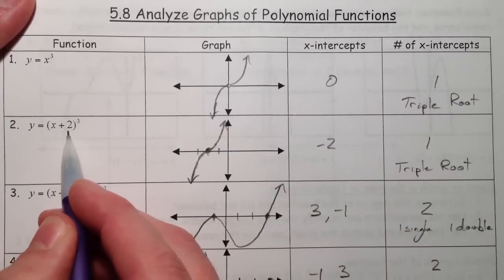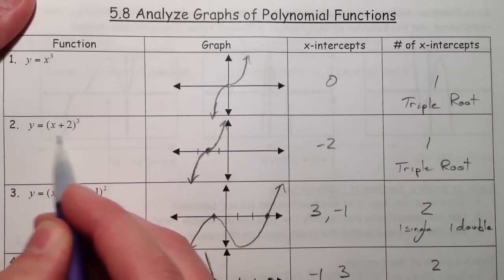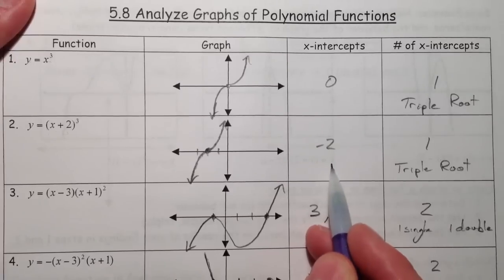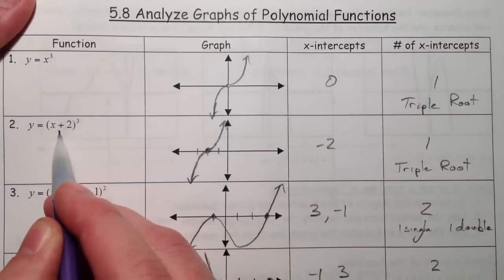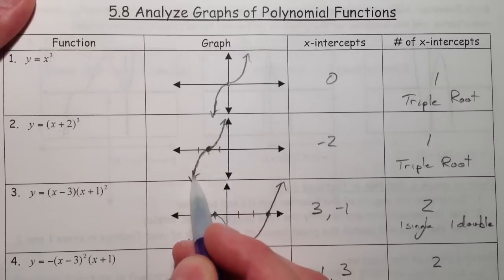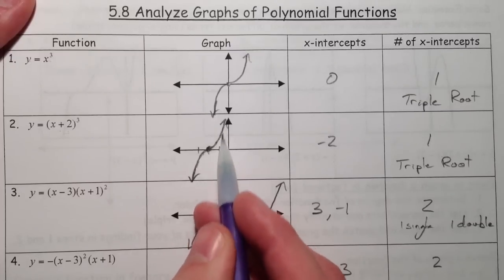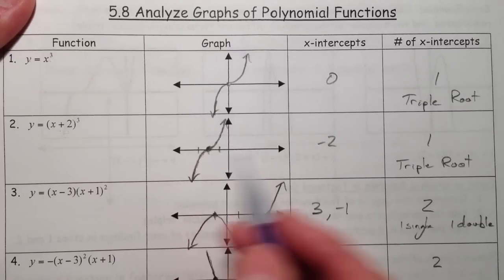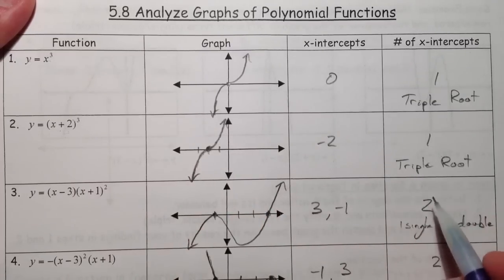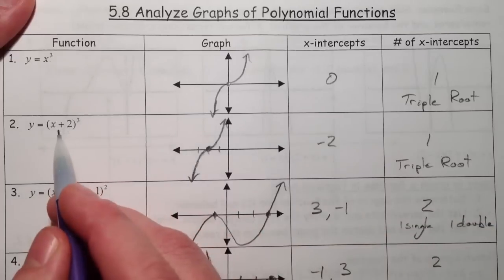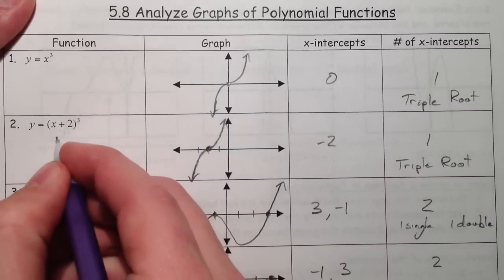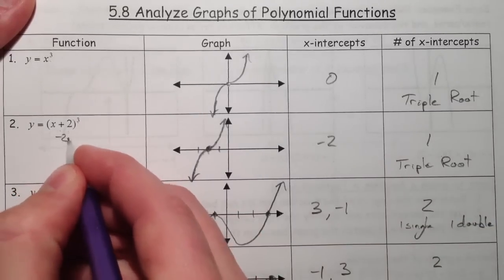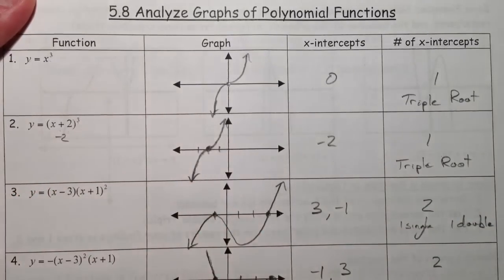If you have x plus two, we know that that shifts it to the left two, or that negative two is an x-intercept. Because if you plug in negative two, you get zero. So here it does the little slowdown at negative two, a little squiggly — called a triple root, because x plus two is raised to the third power, making negative two a triple root.